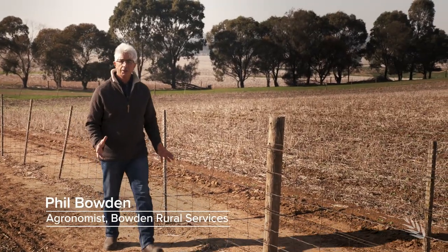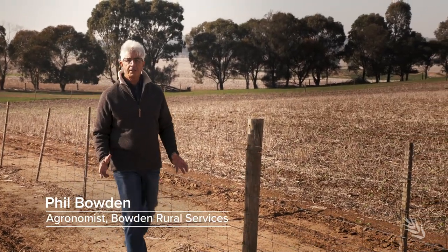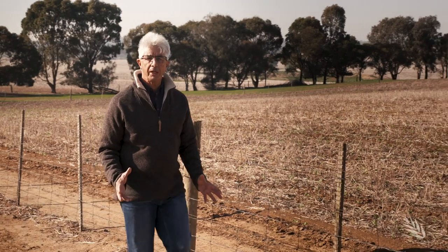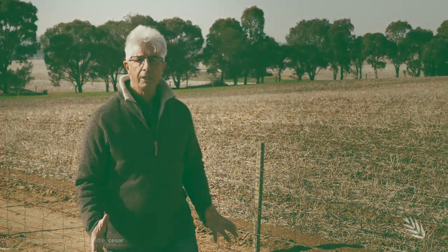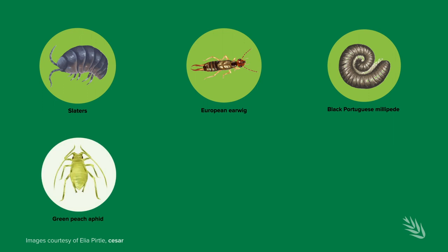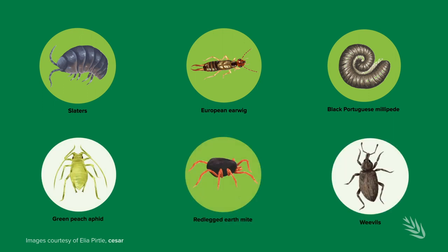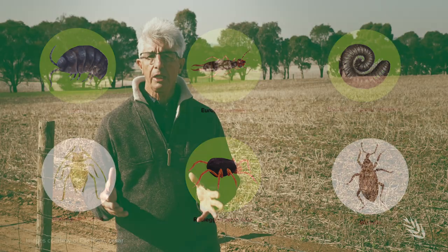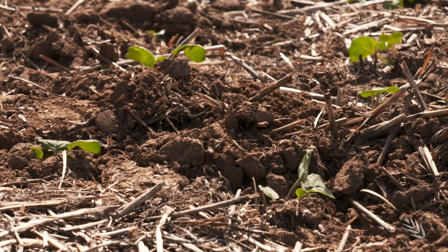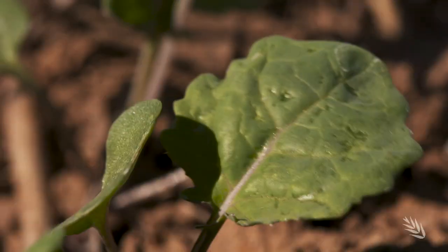Monitoring early season canola pests is such an important aspect of management at this time of year. There's a range of insect pests that have actually changed since we've gone over to zero till and no till systems across Australia, and those pests have had a dynamic effect on the crop.